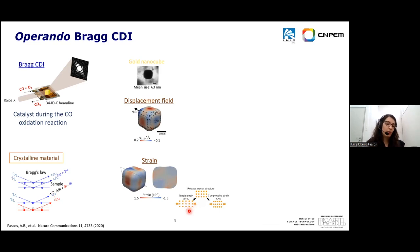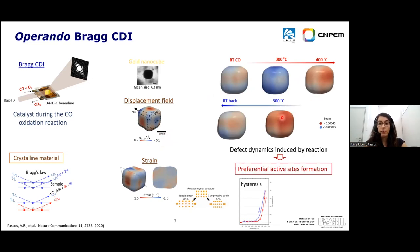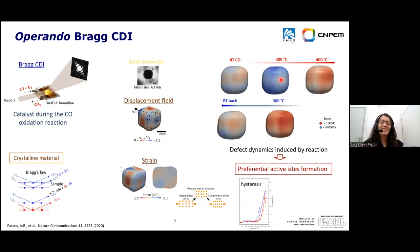When we have tensile strain, it lowers the barrier of the dissociation energy, so the reaction is more likely to happen in regions of tensile strain because it alters the D-band center. We followed these nanoparticles during the reaction and could observe the location of tensile strain and how it formed during the reaction. We obtained information about the different reactivity of similar facets, and this reaction also presents a hysteresis behavior that we could better understand at the single-particle level. Using this operando study, we can obtain information about the relationship between structure and activity.